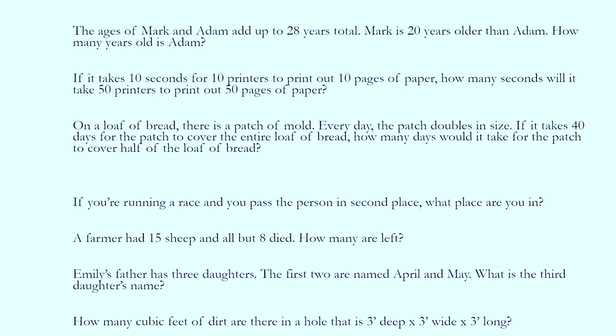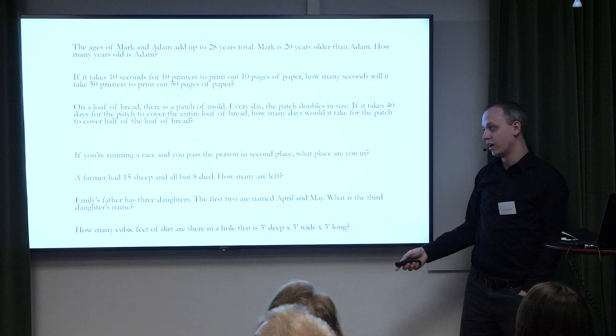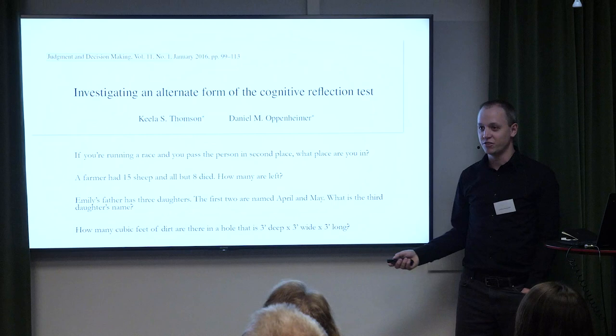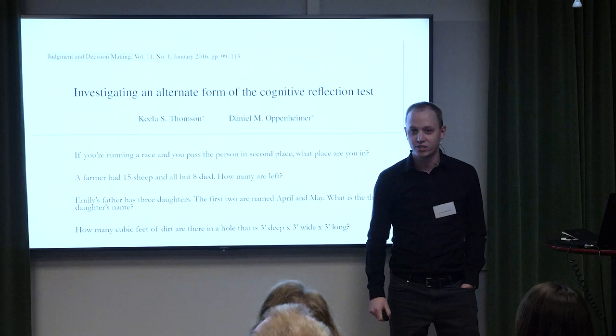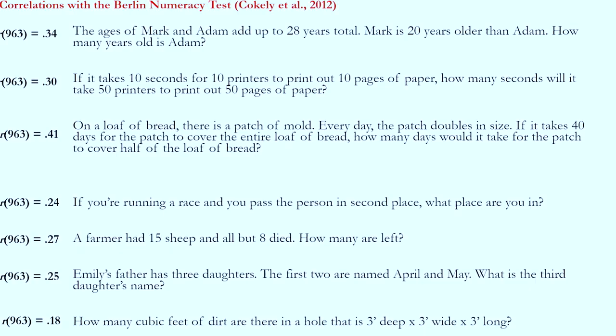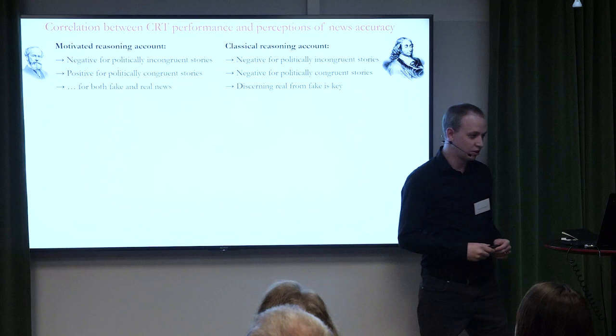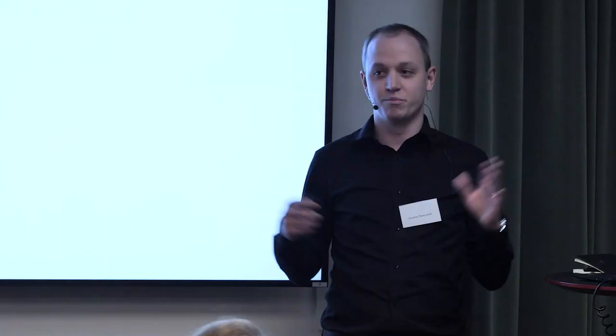Some items are more highly correlated with numeracy than others. For the purposes of these predictions, you can think of CRT as measuring intelligence or cognitive sophistication — the predictions are exactly the same regardless of how you interpret the measure.